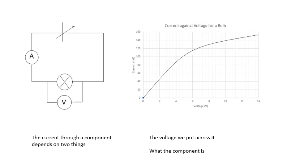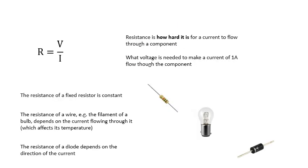Here we see a graph for a filament lamp. When the voltage gets bigger the current gets bigger, but for a bulb it isn't a straight line. Resistance is how hard it is for current to flow through a component. If you put a voltage across a component and get a big current, it has a small resistance — and vice versa. You can think of resistance as the voltage needed to get a current of one amp. The resistance of a fixed resistor is constant — clue's in the name.